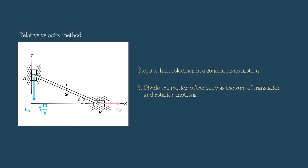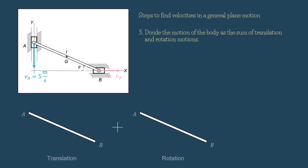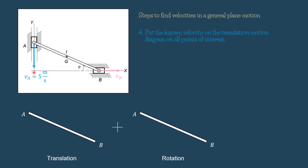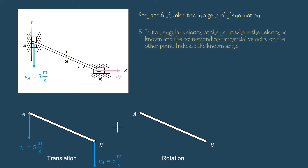Step three: divide the motion of the body as the sum of translation and rotation motions. I draw the rod AB two times — one is intended to show the translation motion, and one is intended to show the rotational motion. Step four: put the known velocity on the translation motion diagram on all points of interest. We have the velocity of A going downward at 5 meters per second, so we put the velocity VA at point A and at point B. Step five: put an angular velocity at the point where the velocity is known, and the corresponding tangential velocity on the other point.